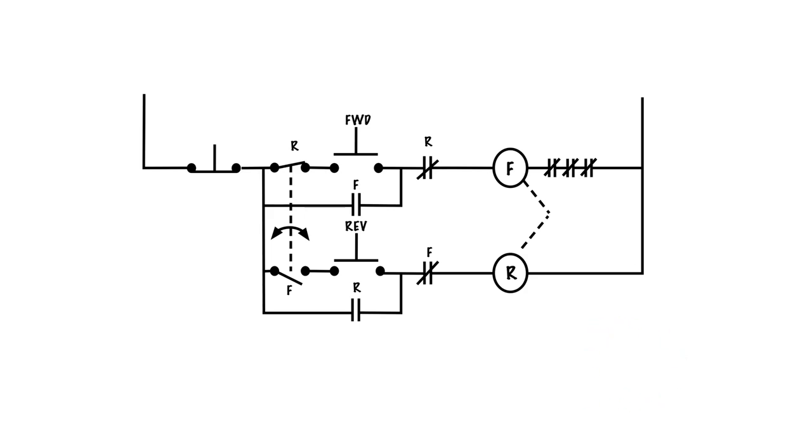Now when I go ahead and hit reverse it will do the exact same thing it did in forward but in the opposite direction. So let's take a look at how this whole sequence works. I push down the reverse button, the R coil energizes, our contacts close, holds in our contact, interlock opens up, the motor starts to spin in the reverse direction.